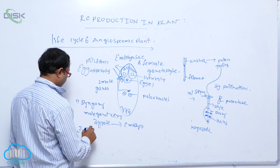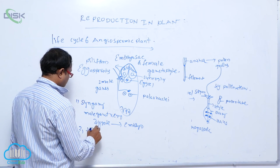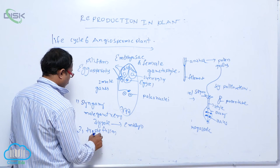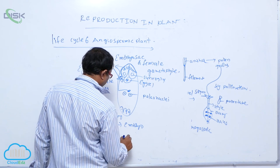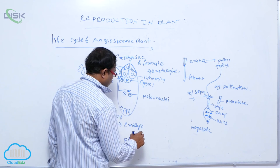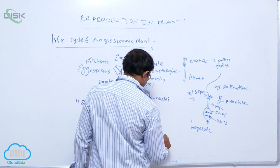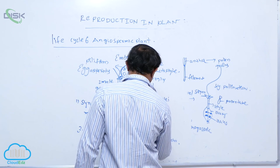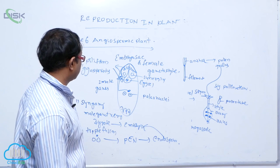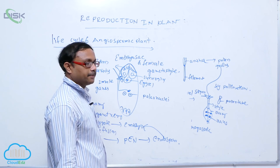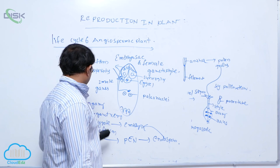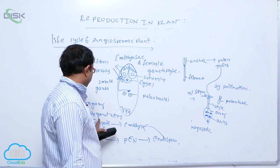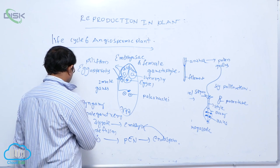The second process is triple fusion: two polar nuclei fuse with one male gamete to produce the primary endosperm nucleus (PEN). This primary endosperm nucleus then produces the endosperm, which provides food material for the development of the embryo. Both syngamy and triple fusion occur in angiosperms, and together they are known as double fertilization — the main important feature of angiosperms.